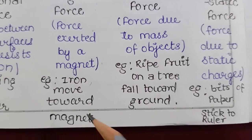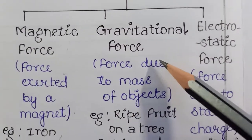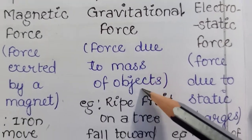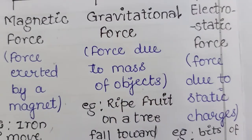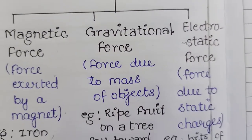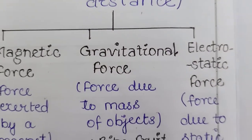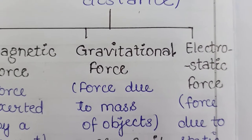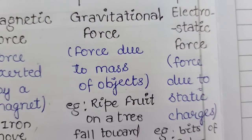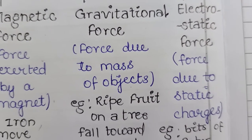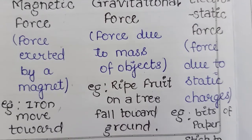Another one is gravitational force. The force which acts due to the mass of an object is called gravitational force. In other words, the pull exerted by the earth on an object is called gravitational force. For example, a ripe fruit on a tree falls towards the ground.